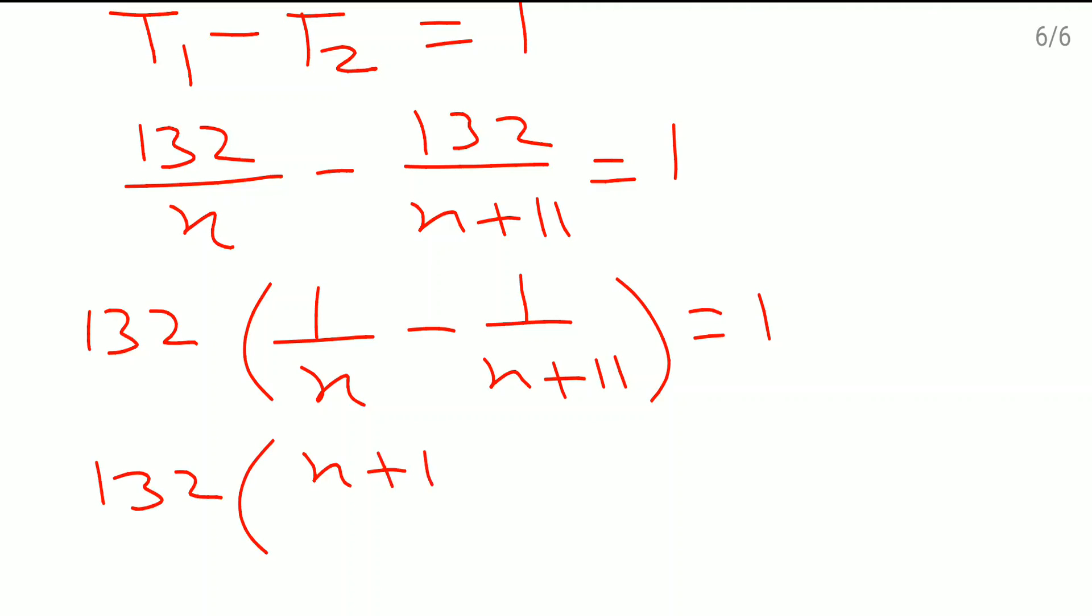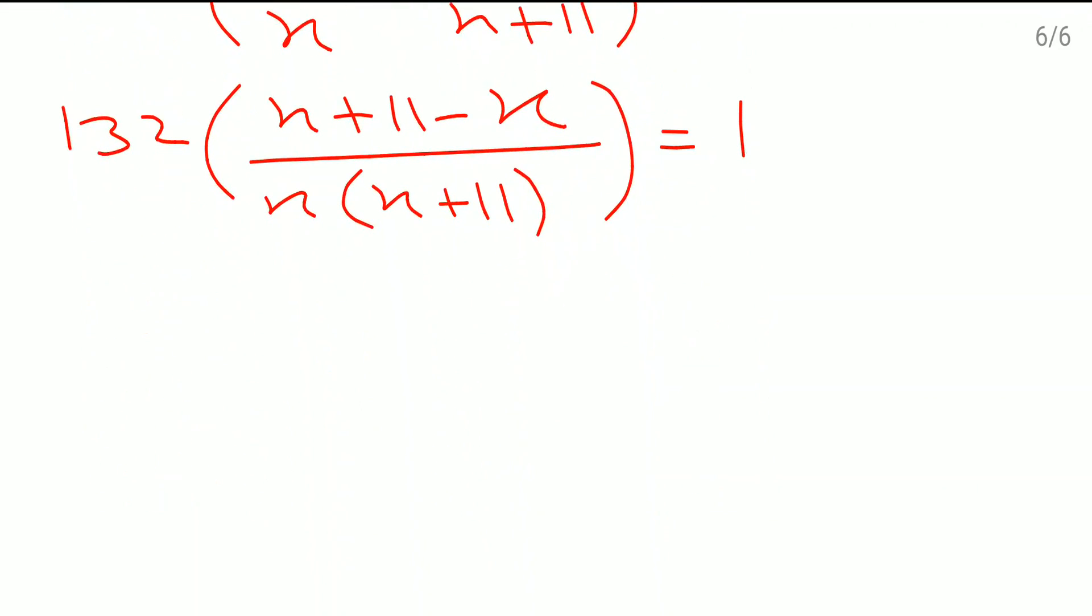This 132 as it is. X plus 11 minus x here. This is x into x plus 11 which is equal to 1. Still this 132 will keep as it is for some time. X and x got cancelled.